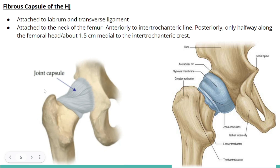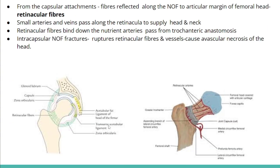Anteriorly, the joint capsule is attached to the intertrochanteric line, and posteriorly it attaches about 1.5 centimeters medial to the intertrochanteric crest — roughly halfway along the femoral neck. From the capsule attachment, fibers reflect along the femoral neck as retinacular fibers, which extend up to the articular margin of the femoral head.